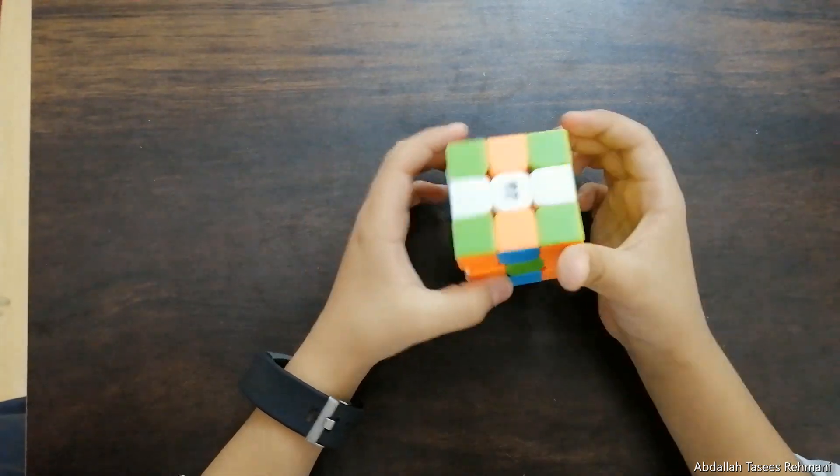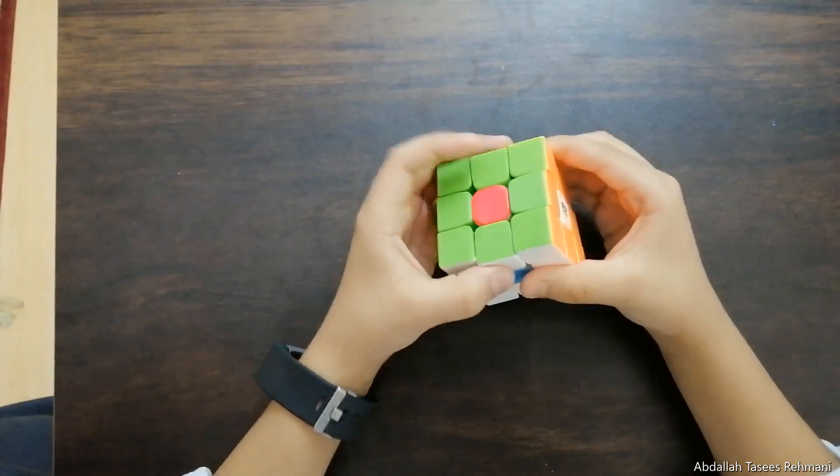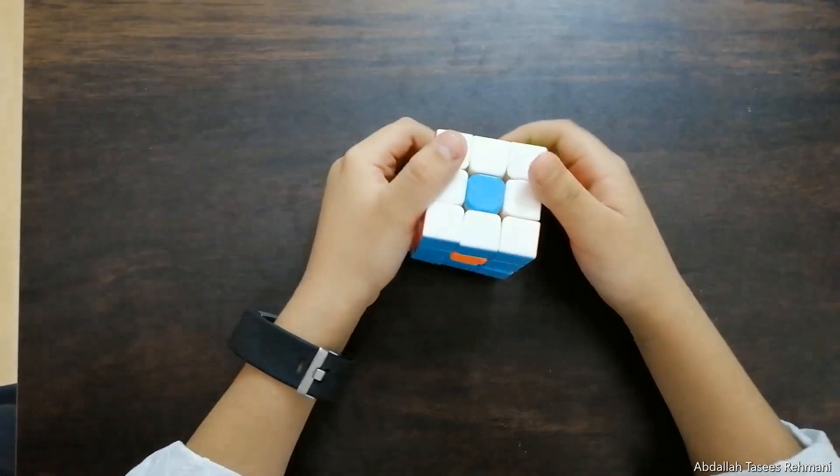Now we turn the cube like this and bring this down. Turn the cube like this. Bring this down. So we have the donut method right here.